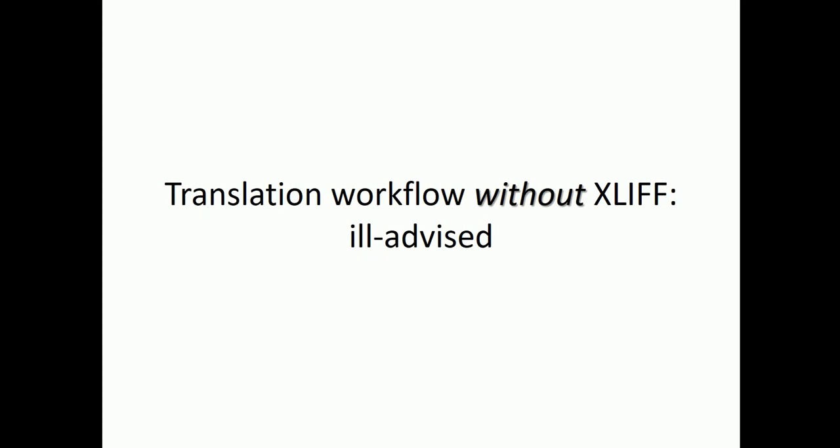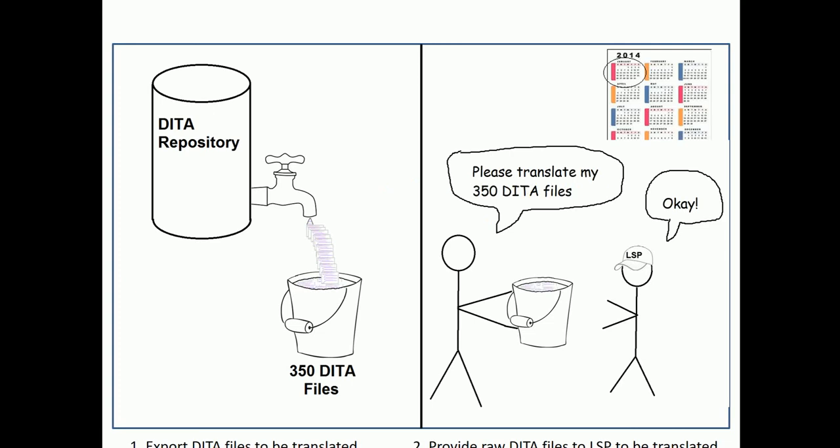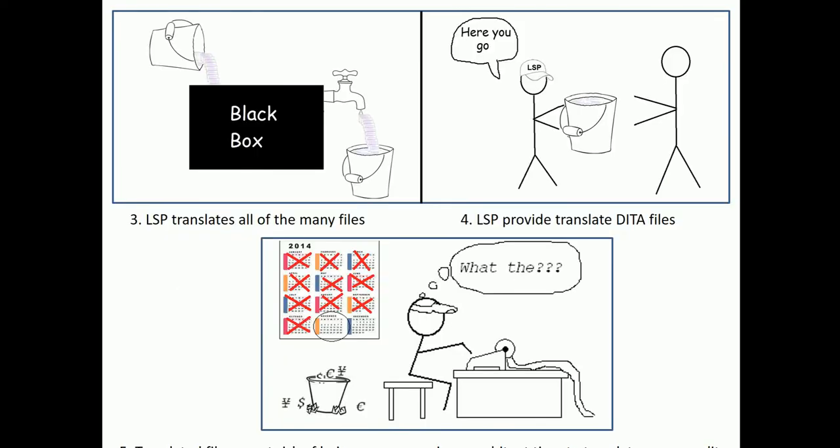Let's walk through the ill-advised workflow without XLIF. We have our DITA repository with 350 files. We put them together in one big group and hand the whole bucket to the localization service provider. We're in January at the start of the year. The LSP does something — it's a black box to us — and then at the end they kick out all of these translated individual topics and hand the bucket back to us.